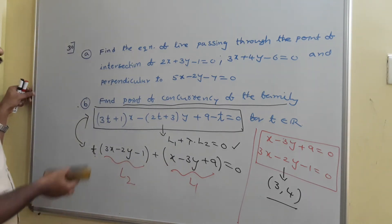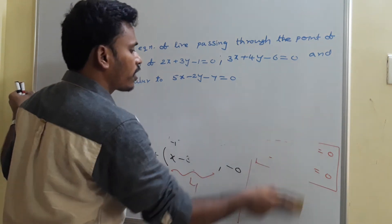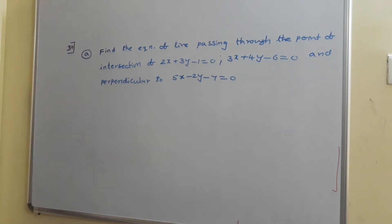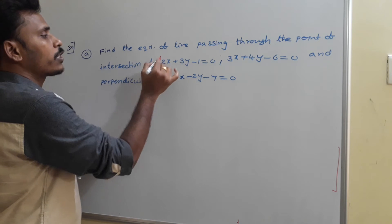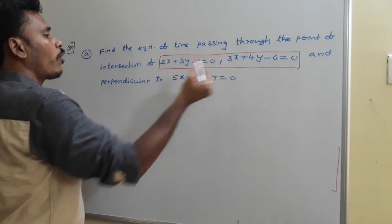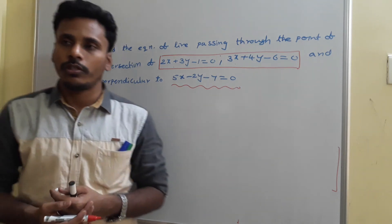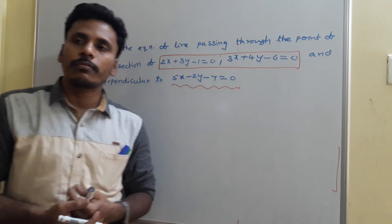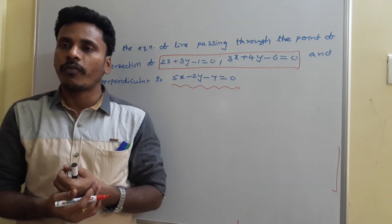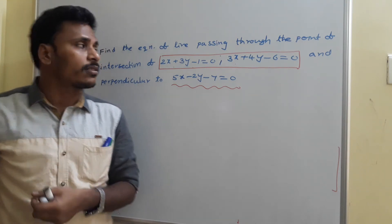Now for part A: we need to find the equation of the line passing through the point of intersection of two lines — 2x plus 3y minus 1 equals 0 and 3x plus 4y minus 6 equals 0 — which is perpendicular to a third line: 5x minus 2y minus 7 equals 0. There are different methods, but here I am going to utilize the concept of family of lines.